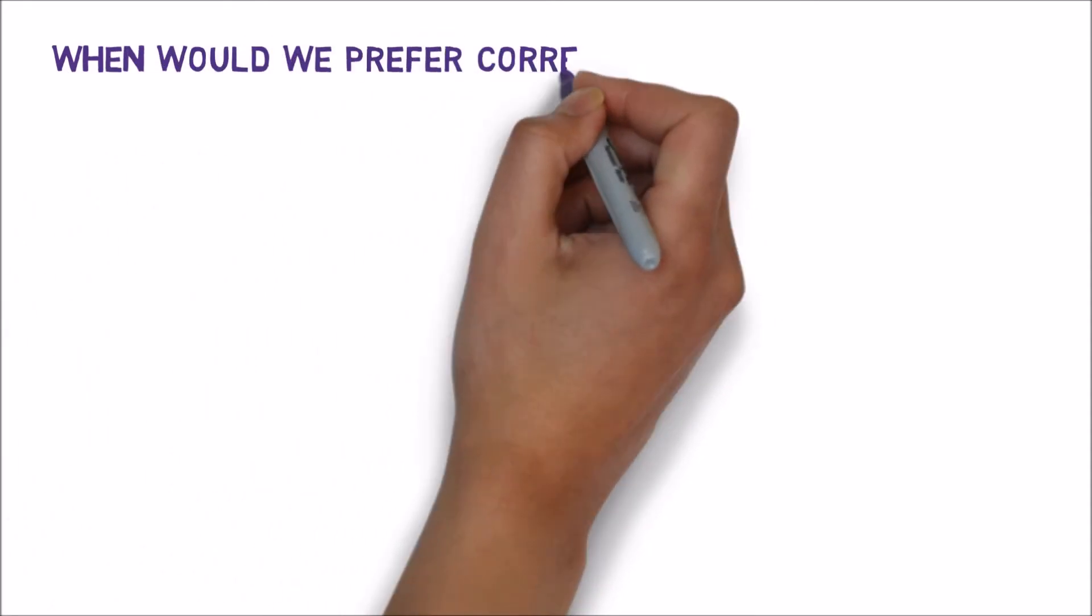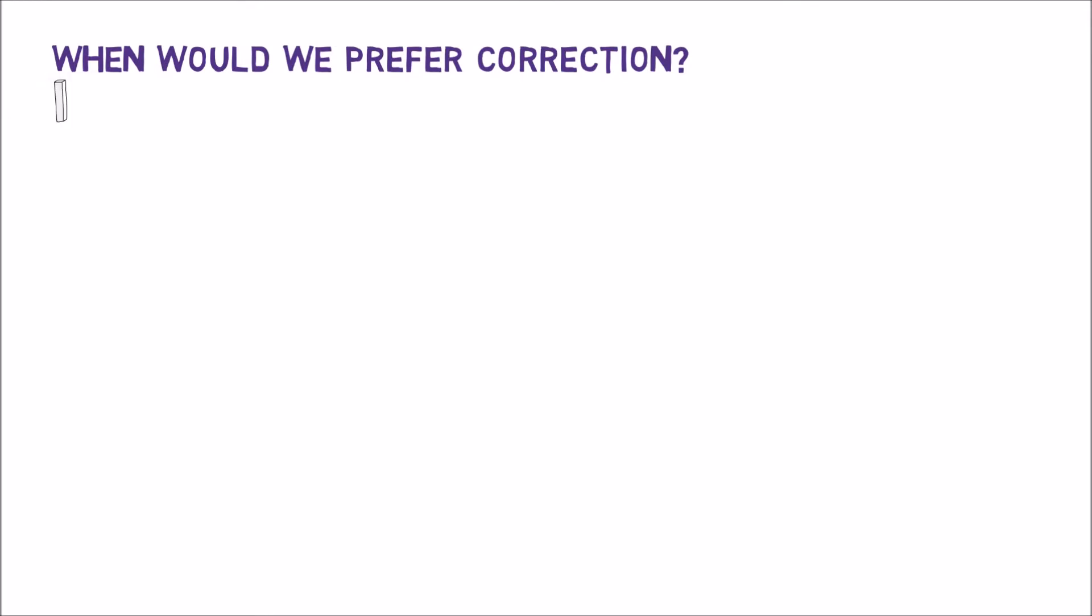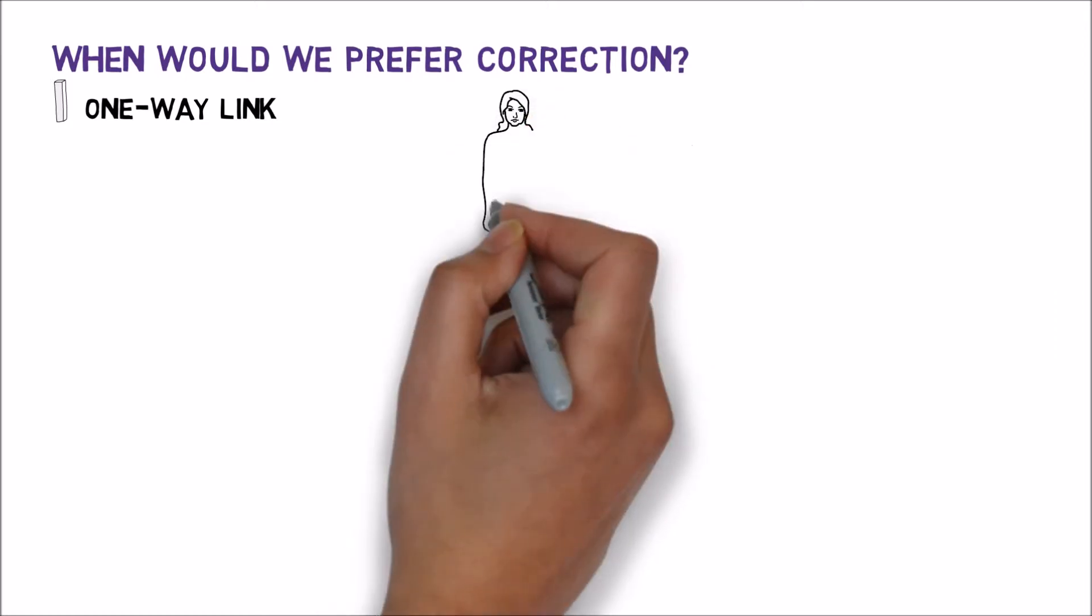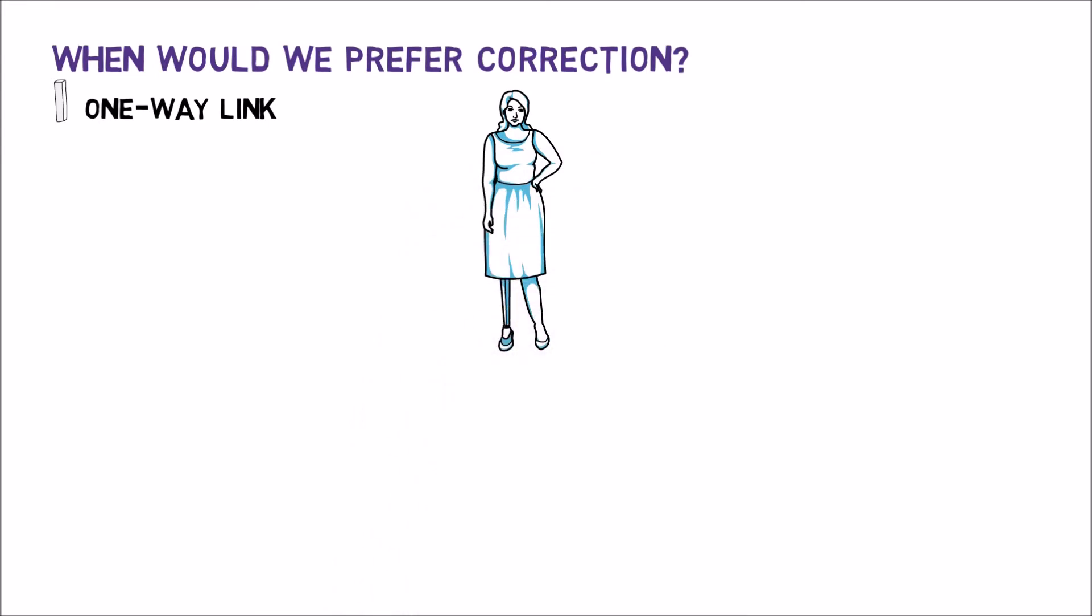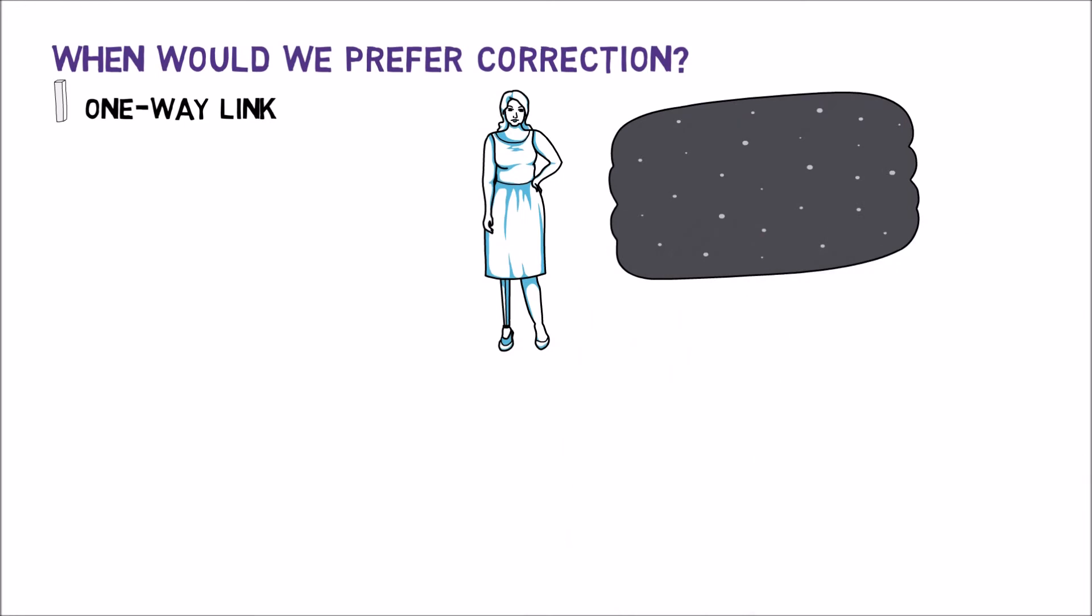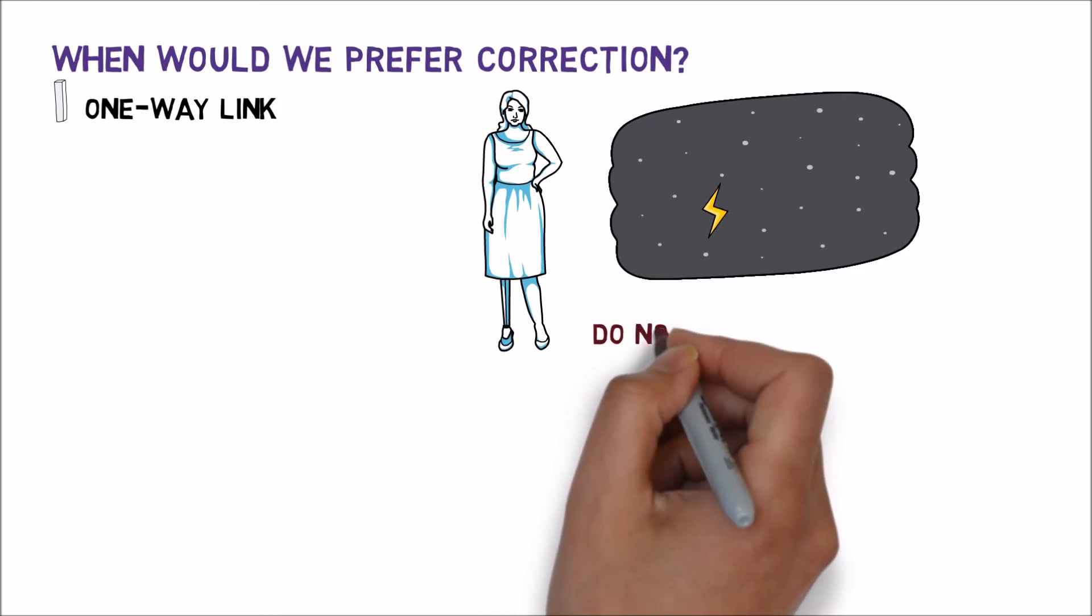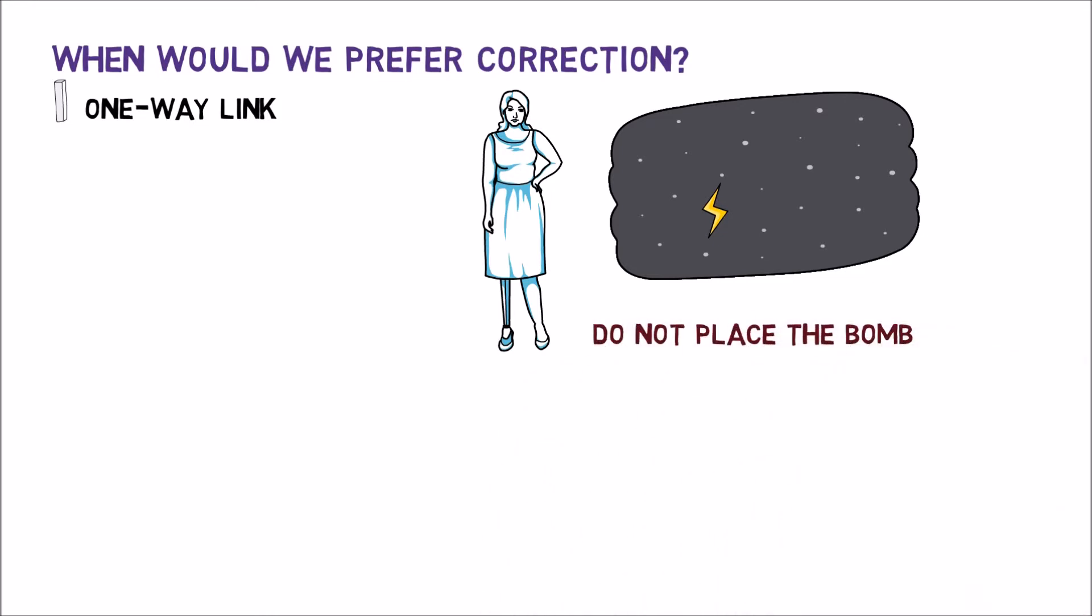So when would we prefer error correction? One case might be when we have a one-way link, that is, a network where we can only transfer data in one direction. For example, let's say we have a secret agent that we need to send a message to. Our agent knows that she needs to look up at the sky at exactly midnight and she'll see a series of flashes indicating the secret message. The secret agent cannot reply, or her location and identity will be revealed. In addition, we don't want to send the message over and over again, as we don't want to draw much attention and to make it harder for someone to intercept the message. In this case, we definitely want our agent to receive the exact message that we've sent. Consider that we want to send her the message 'to not place the bomb.' We don't want to risk the unfortunate scenario of her reading the message as 'to now place the bomb' due to an error.